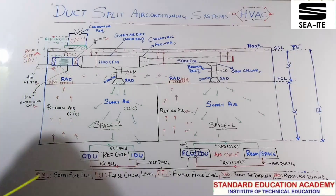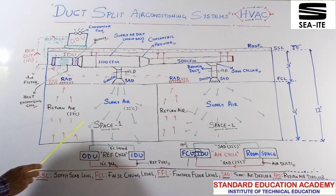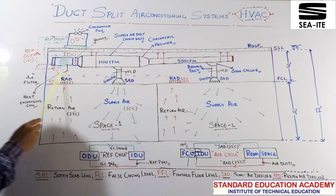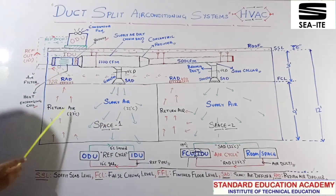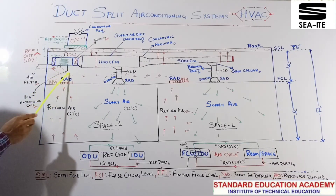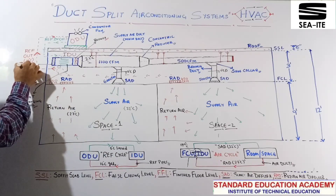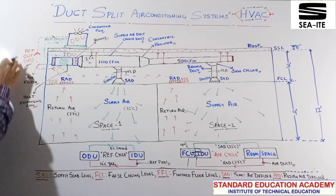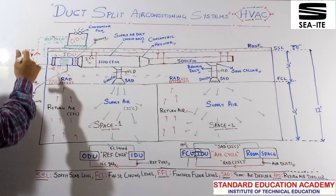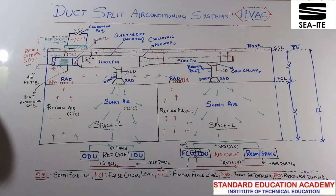From outdoor to indoor, refrigerant at 6 degree Celsius is coming. The return air, which is striking at 27 degree Celsius from the return air diffuser, is sucked in by the blower. Return air temperature 27 degree Celsius, refrigerant temperature 6 degree Celsius — heat exchange is taking place. Due to that you are getting a supply air of 22 degree Celsius. But your refrigerant outlet, whose inlet is 6 degree liquid, gives you 16 degree condensate gas at outlet. Again this gas is going to your outdoor unit to carry out the cycle, to get converted back into 6 degree refrigerant.